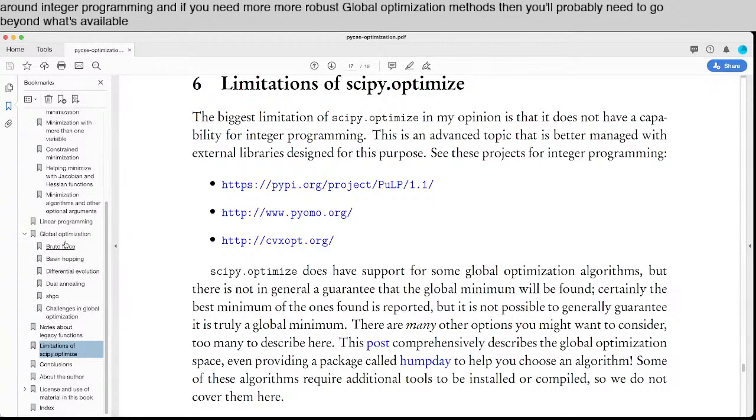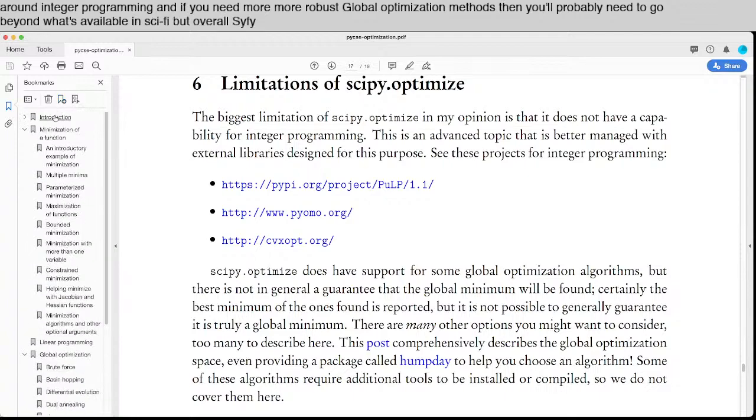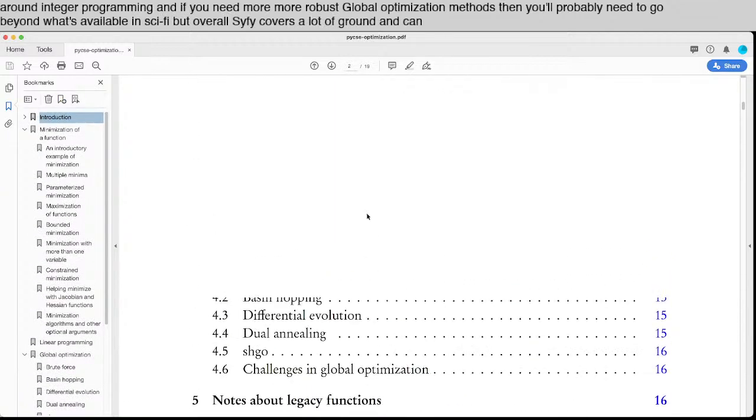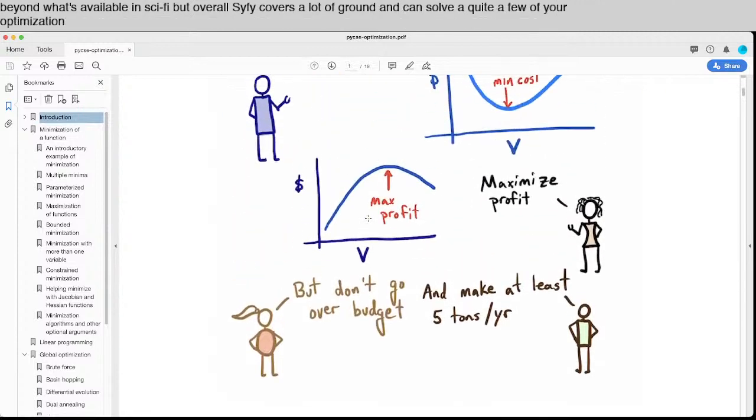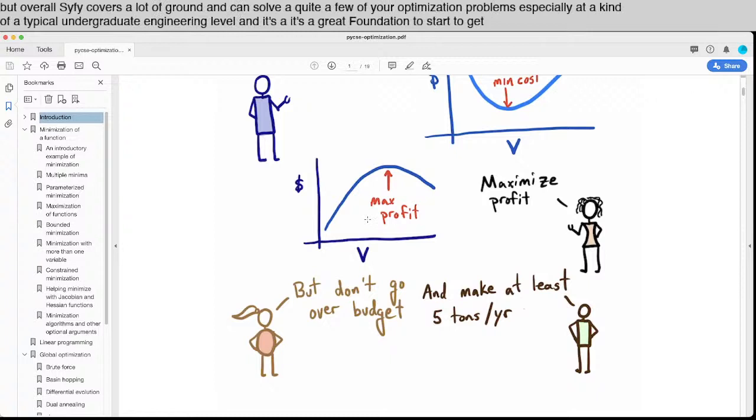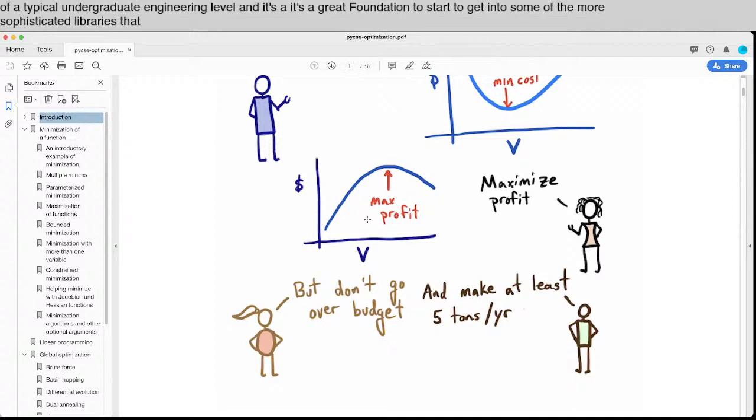But overall, SciPy covers a lot of ground and can solve quite a few of your optimization problems, especially at a typical undergraduate engineering level. It's a great foundation to start to get into some of the more sophisticated libraries that solve problems that are either larger or more difficult.